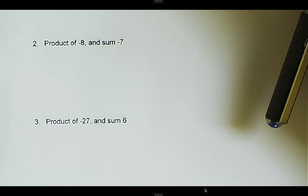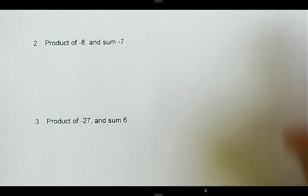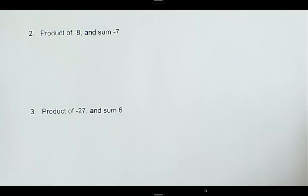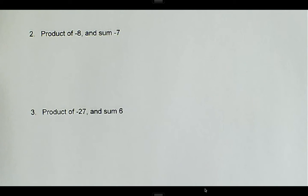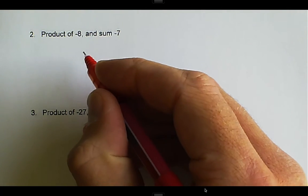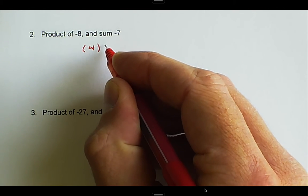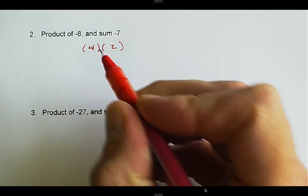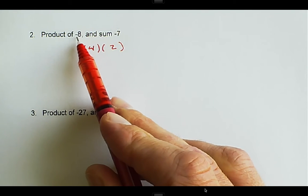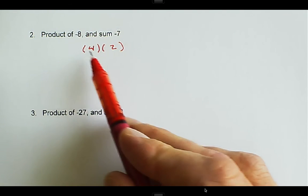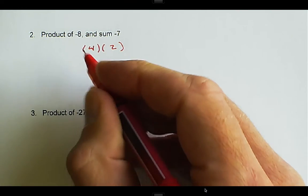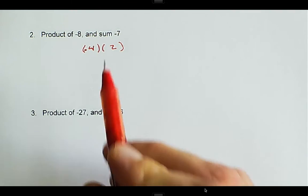We could look at number 2 here. A product of negative 8 and a sum of negative 7. I always like to start with the product. What numbers multiply together? Whenever I see 8, 4 is always a good number to pick. I'm going to try 4 and 2. I know 4 times 2 will get me 8, but now I notice there's a negative sign out front. In order for there to be a negative sign, one of these has to be negative. I'll just try 4 and make that negative.